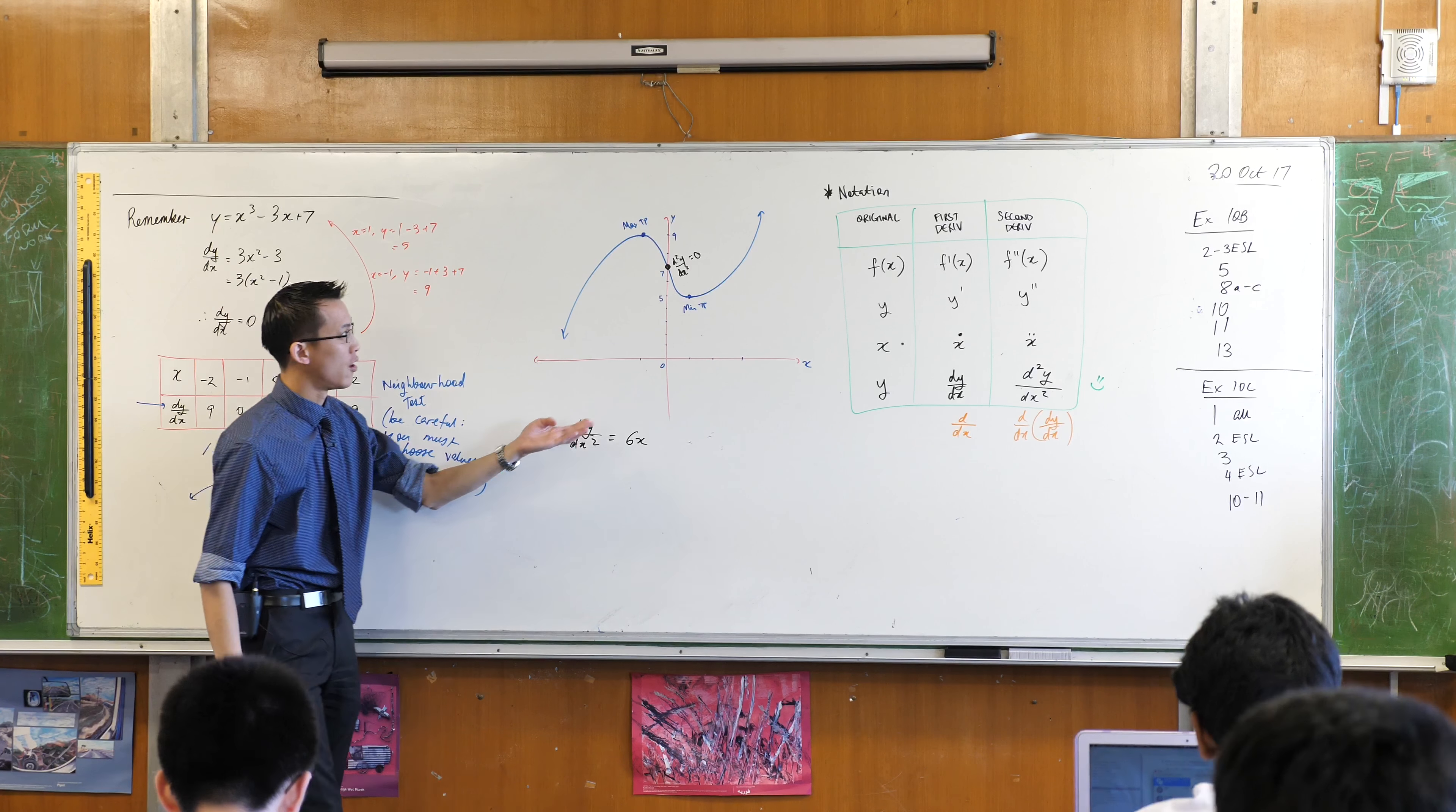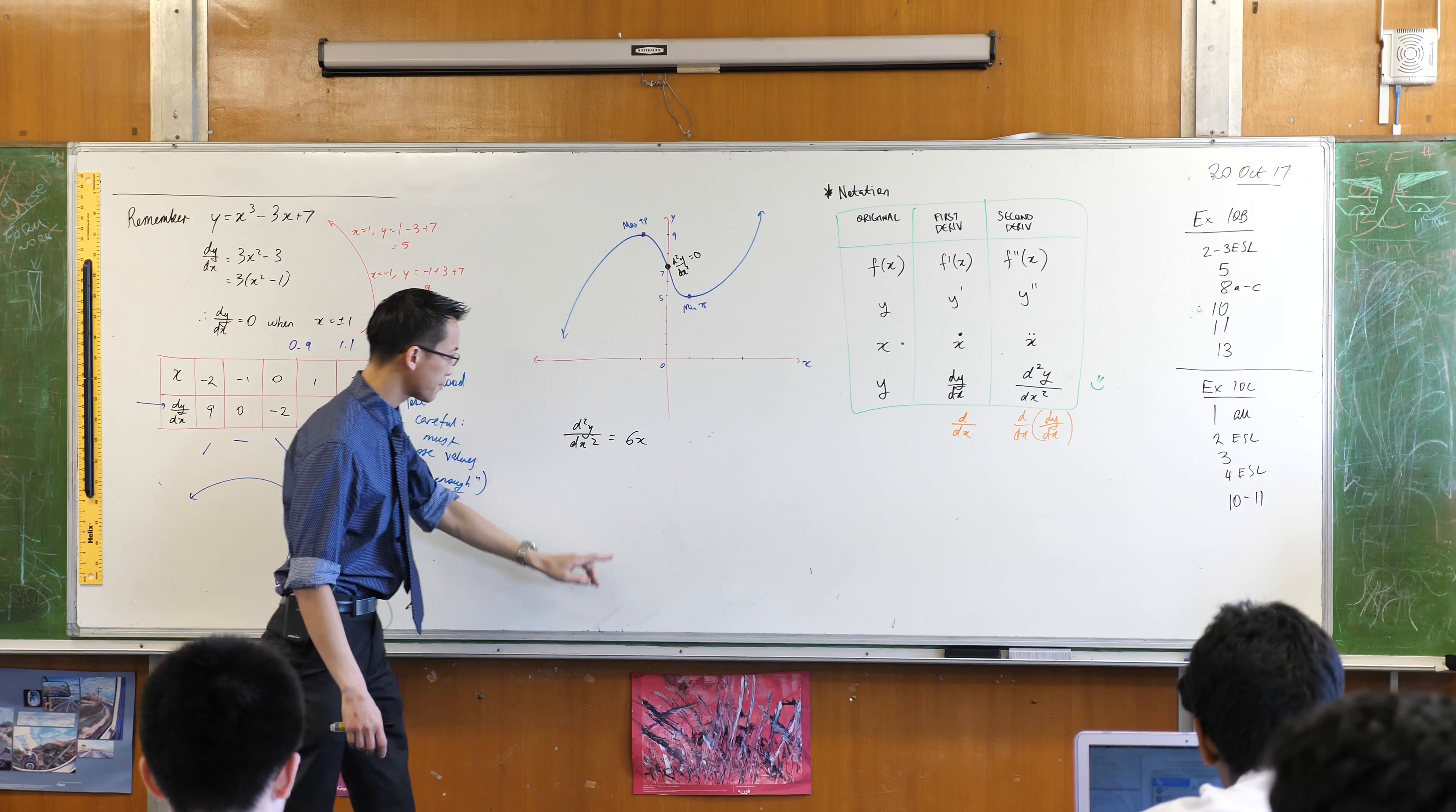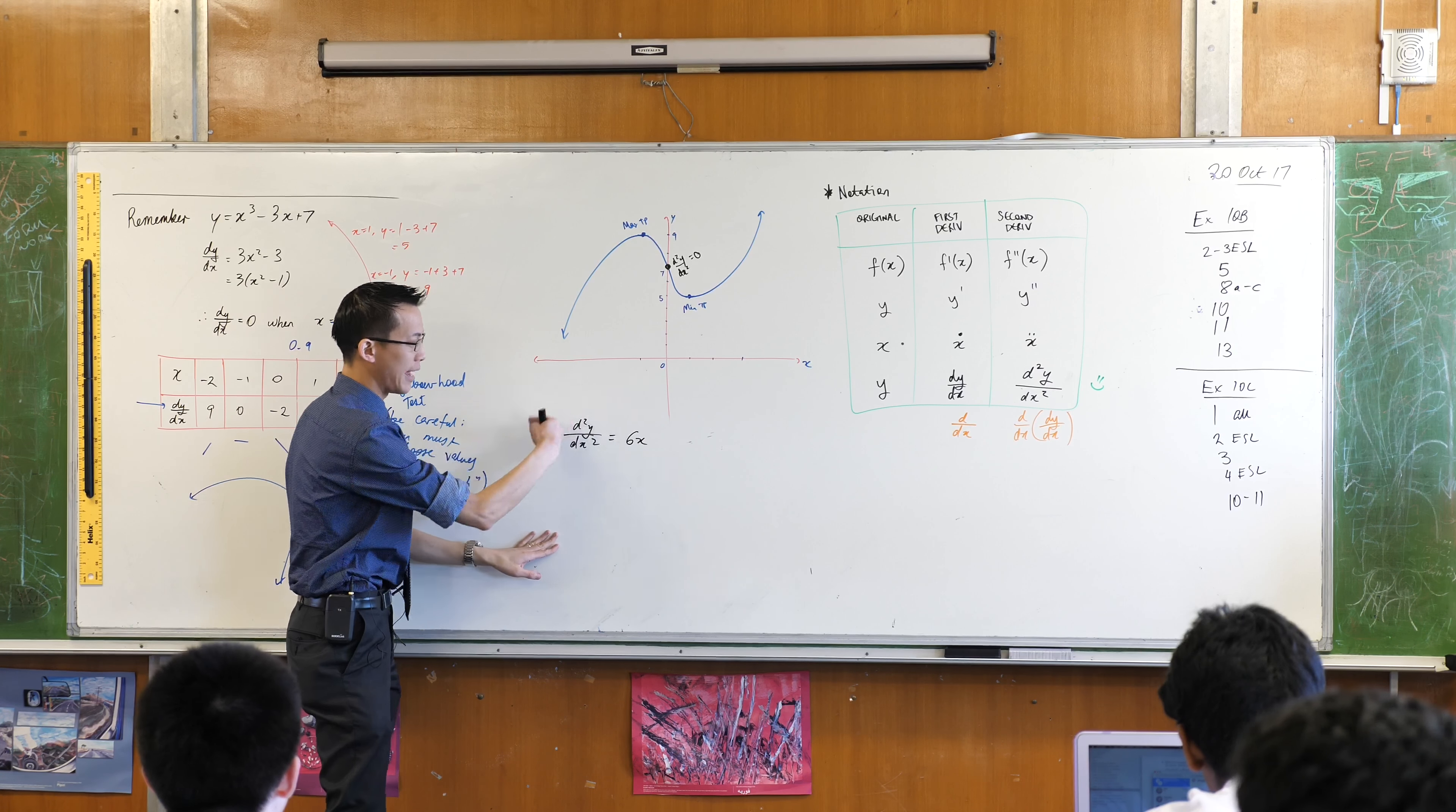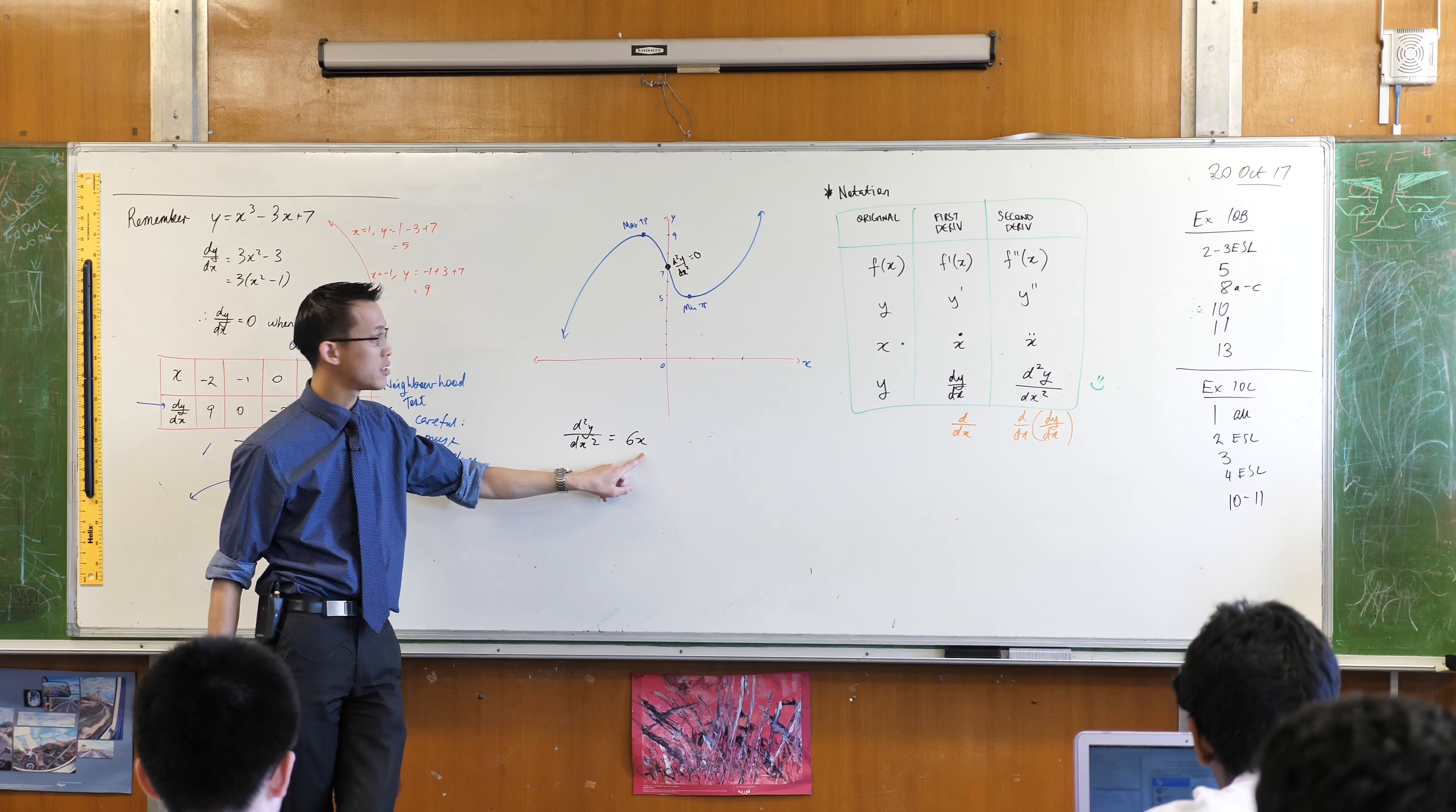So therefore, I'm interested in what happens on either side of this spot. What happens, for instance, to the right-hand side? When I put in positive values of x, what is the sign of the second derivative? It's also positive. Six times any positive number, also positive.